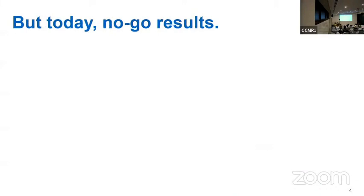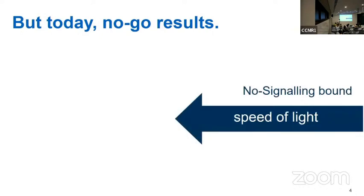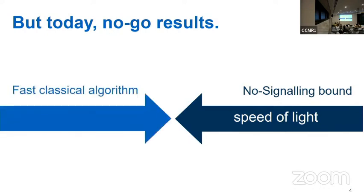For this reason, it's not trivial to find bounds imposed by causality in networks. Today I'm going to present you some no-go results. It will be obtained by combining two directions of research. On one side, we will have no-signaling bounds that come from causality or the speed of light that will impose constraints on networks of quantum computers. On the other hand, we will have fast classical algorithms. This will create a sandwich. By bringing these two lines of work close together, we'll be able to rule out quantum advantage.